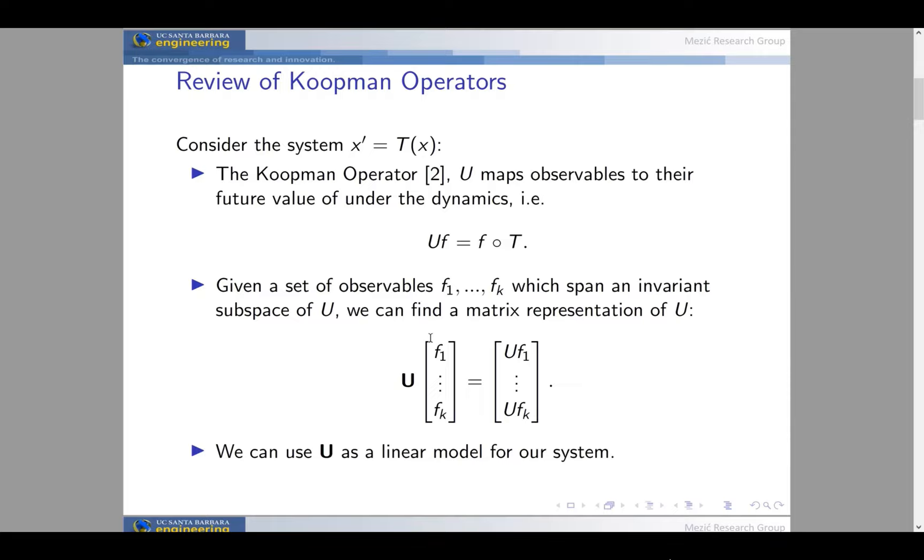With a linear operator, we can use linear systems theory to study the system. But the main issue is it is an infinite dimensional operator. In order to study it, we need to find a restriction of the operator that can be represented in finite arithmetic. To do this, we need to find an invariant subspace of the operator. If we have observables f1 up to fk which span an invariant subspace, we can find a matrix which represents the operator on the subspace. Once we have that, we can use that matrix U as a linear model for the non-linear system.